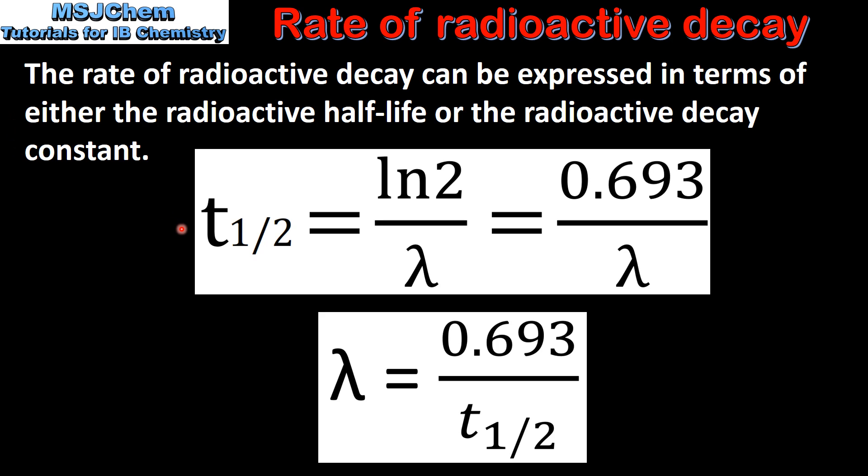This equation which is given in the data booklet shows the relationship between the half-life and the decay constant. The half-life is equal to the natural log of 2 divided by the decay constant, which is equal to 0.693 divided by the decay constant, and the decay constant is equal to 0.693 divided by the half-life.